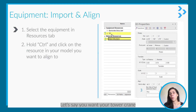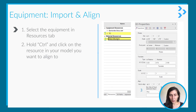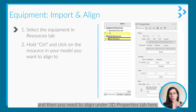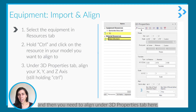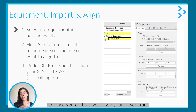Let's say you want your tower crane next to your steel structure. You can first click on the tower crane and then hold Control and choose the steel structure. Then under the 3D properties tab, you need to choose X align, Y align, and Z align while still holding Control. Once you do that, you will see your tower crane next to your steel structure.